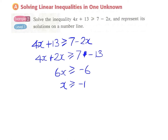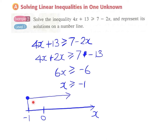Now to represent the solution on the number line, we draw and mark zero. Since x is greater than or equal to minus 1, we mark minus 1, and since this includes the equal sign, this is represented as a solid dot. We draw an arrow to the right, so the range of values of x which satisfy this inequality is on the right hand side of negative 1. For example, substituting zero: zero is greater than minus 1, which is always true, confirming this range represents all numbers satisfying the inequality.